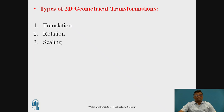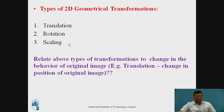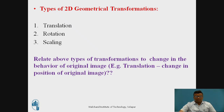What are the different types of 2D geometrical transformation? The first one is translation, rotation, and scaling. Relating the types of transformation to the change in behavior of the original image: translation, in general, is a change in the position of the original image, so there will be a modified image after moving the object, so that we can observe the particular geometrical entity very easily.